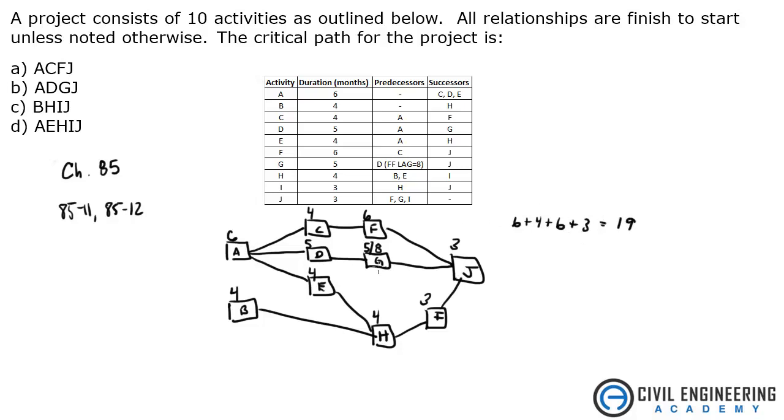How about A, D, G, J, which is A, D, G, J. That's six, plus five, plus eight, plus three. So that's 11, 19, 22.